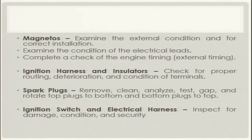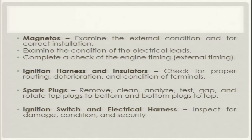Next in the 100-hour inspection is magnetos: examine the external condition and correct installation. The magnetos should be examined for external condition, correct installation, and proper security. Examine the condition of the electrical leads from the magnetos — they should be properly secured. A very important part of the 100-hour inspection is checking the external timing of the magneto. Ignition harness and insulators should be checked for proper routing, deterioration, and condition of terminals — they must be properly routed with no deterioration and satisfactory terminal condition.